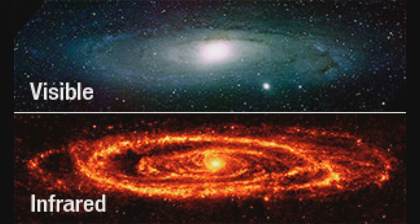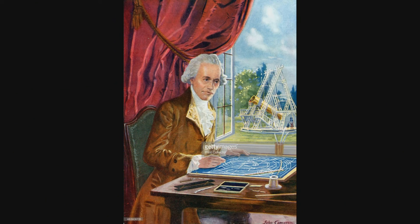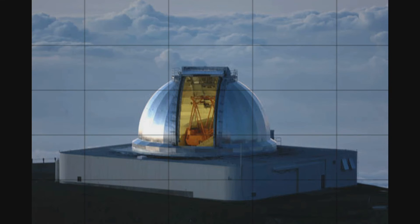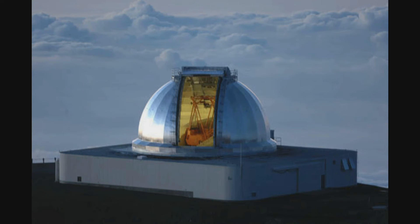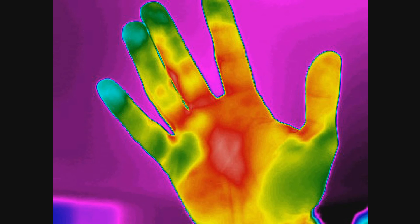Infrared is useful when probing areas surrounded by clouds because infrared can pass through them. It was discovered in the 1800s by Sir Frederick William Herschel. Infrared has many uses including TV remotes, infrared lamps, thermal imaging, and astronomy. There aren't many dangers with infrared, but at very high levels it can cause eye problems and pain to the skin.